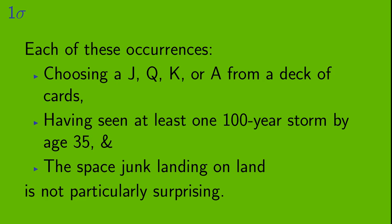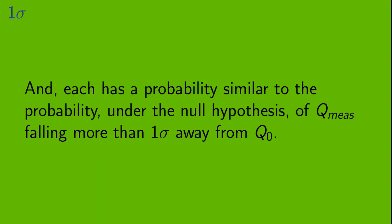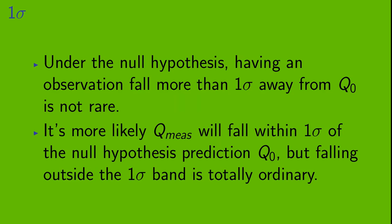Okay, now on to example 3. Let's say there's a piece of space junk that is expected to fall to Earth. It is thought to be equally likely to hit anywhere on the Earth. There's about a 30% chance that it will hit land anywhere on Earth. While it's more likely to hit water, it wouldn't be terribly surprising if it hit land. Okay, so each of these occurrences - 1. Choosing a jack, queen, king, or ace from a deck of cards. 2. Having seen at least one 100 year storm by age 35. 3. The space junk landing on land - is not particularly surprising. And each of them has a probability similar to the probability under the null hypothesis of Q measured falling more than one sigma away from Q0. Under the null hypothesis, having an observation fall more than one sigma away from Q0 is not rare. It's more likely that Q measured will fall within one sigma of the null hypothesis prediction Q0, but falling outside the one sigma band is totally ordinary.